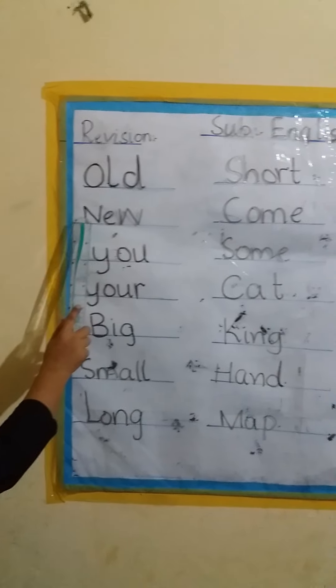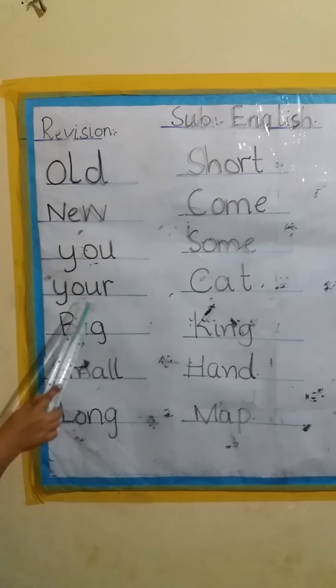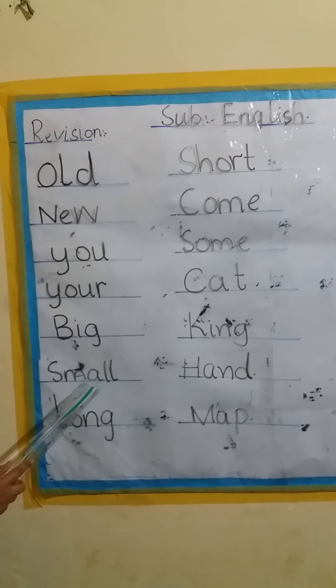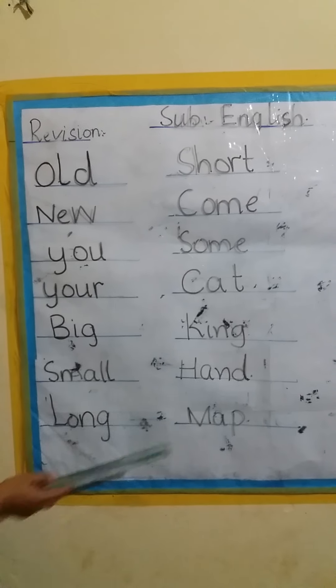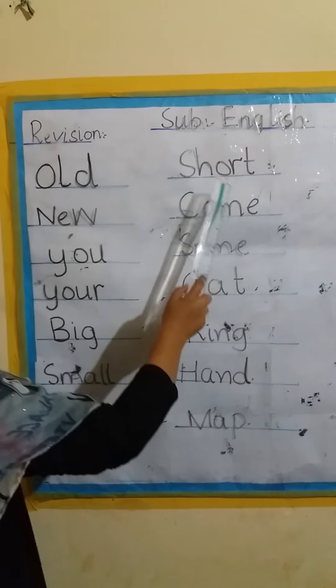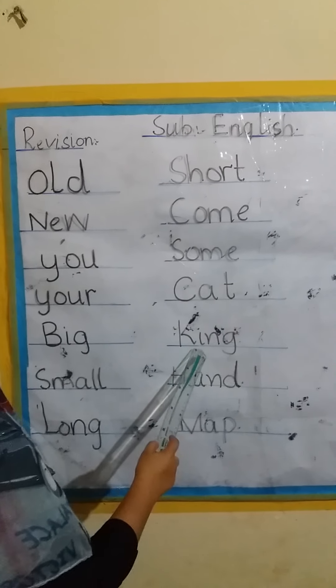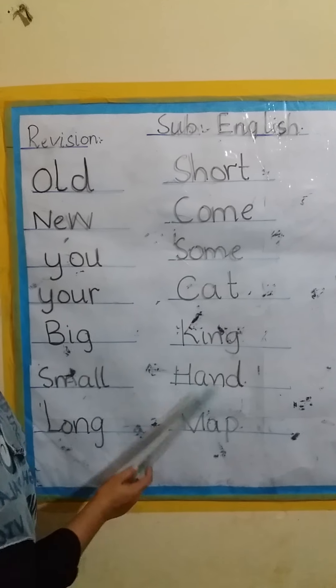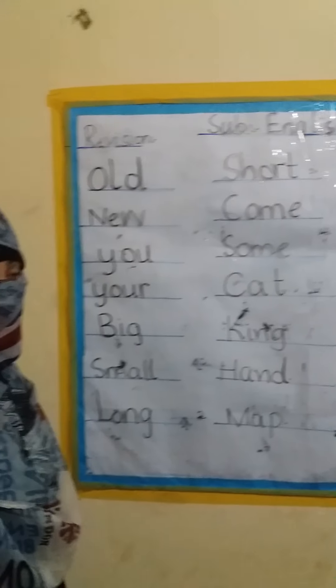Old, new. You, your. Big, small. Long, short. Come, some. Cat. King, hand. Map.